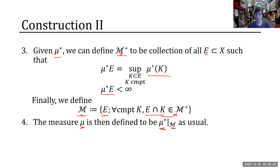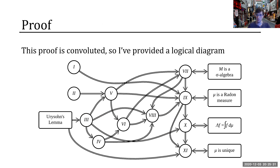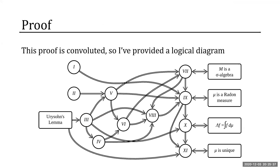That is the construction behind the Riesz representation theorem. If you want to prove it, there's an 11-step process, but there's not time to go over that today. Thank you, Kurt. Now we have some time for questions — any questions?